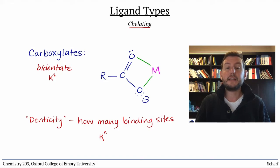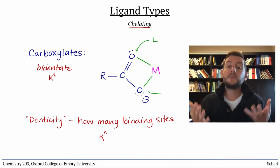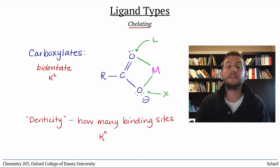Each of the binding sites of a chelating ligand is classified as X or L, so a carboxylate is an XL ligand.